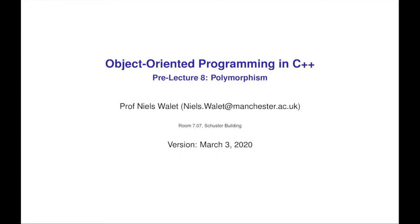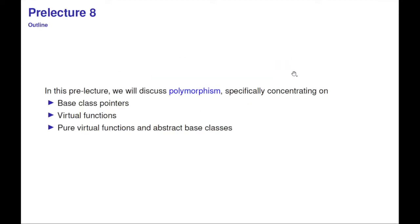Today we're going to talk about polymorphism, a very useful part of object-oriented programming. We'll concentrate on three objects: base class pointers, virtual functions, and pure virtual functions, which are closely linked to abstract base classes, also called interfaces.